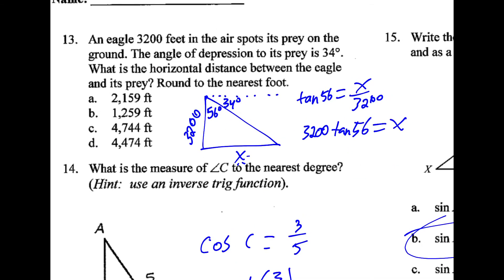For number 13, we have our eagle 3,200 feet in the air. That's this part of the triangle. Looking straight forward, but then we're looking 34 degrees down. So that means the angle inside the triangle is actually 56. And then our missing side is the horizontal distance. So I set up SOHCAHTOA, tan 56 is equal to opposite over adjacent. I move 3,200 over. I multiply and I get 4744C.